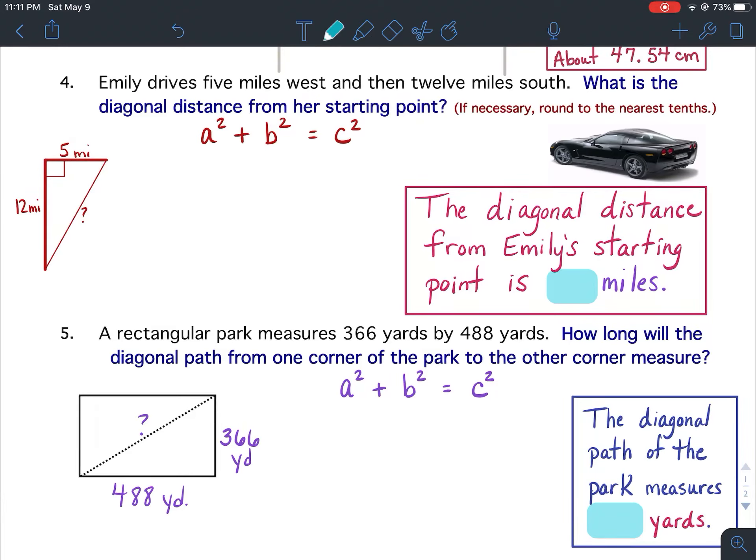Bellwork 24a questions 4 and 5. Number 4. Emily drives 5 miles west and then 12 miles south. What is the diagonal distance from her starting point?